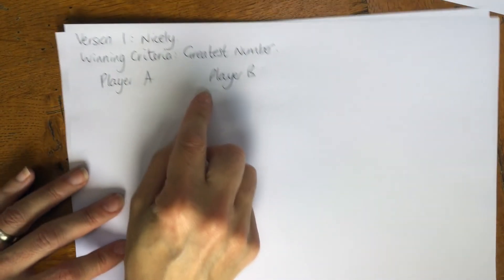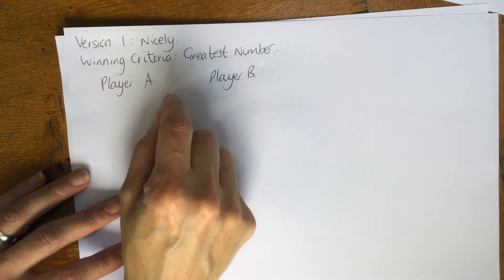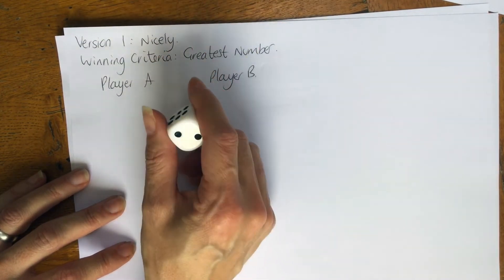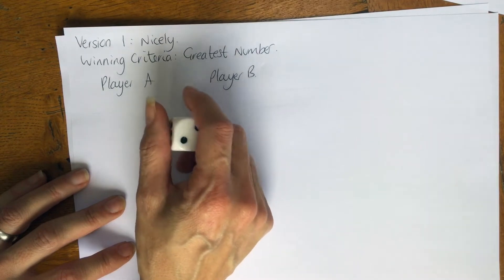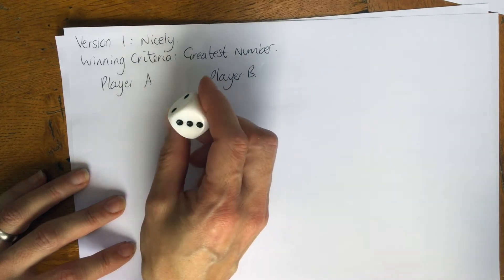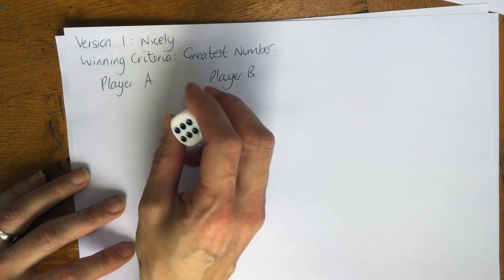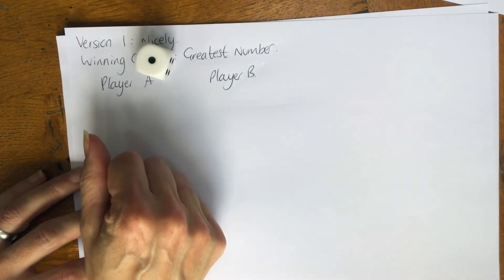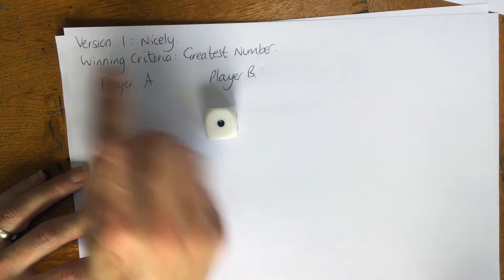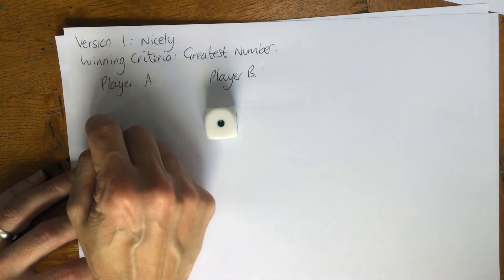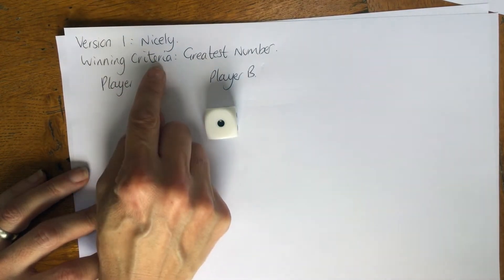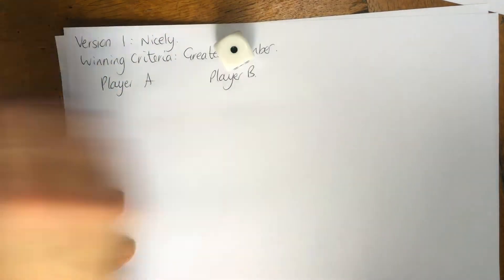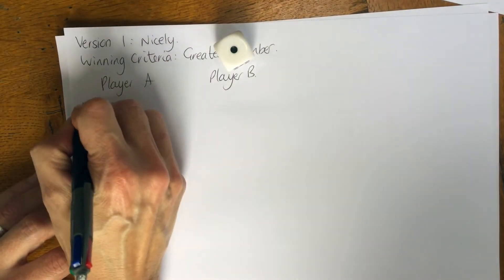Today we're going to learn how to play Crooked Rules. Crooked Rules is a great game for Year 3 upwards — it looks at place value and what digits actually mean. What you need is a dice, some paper, and someone to play against. The first version we're going to play is Nicely, and our winning criteria this time is going to be simply greatest number wins. I'm going to draw myself a box.